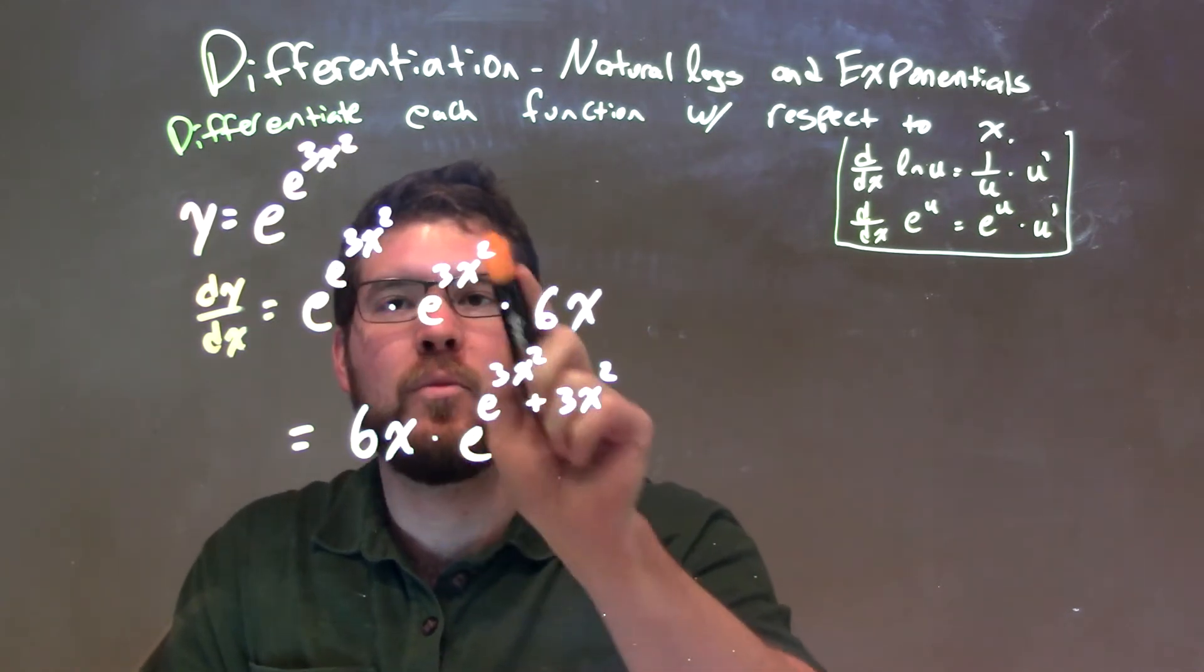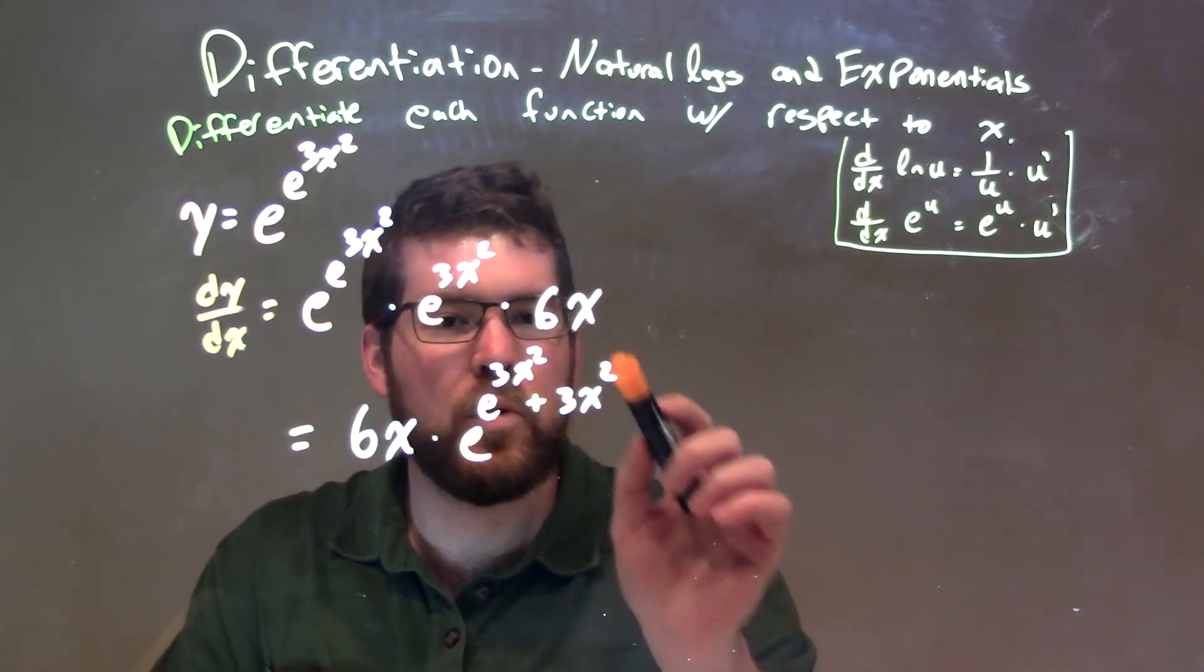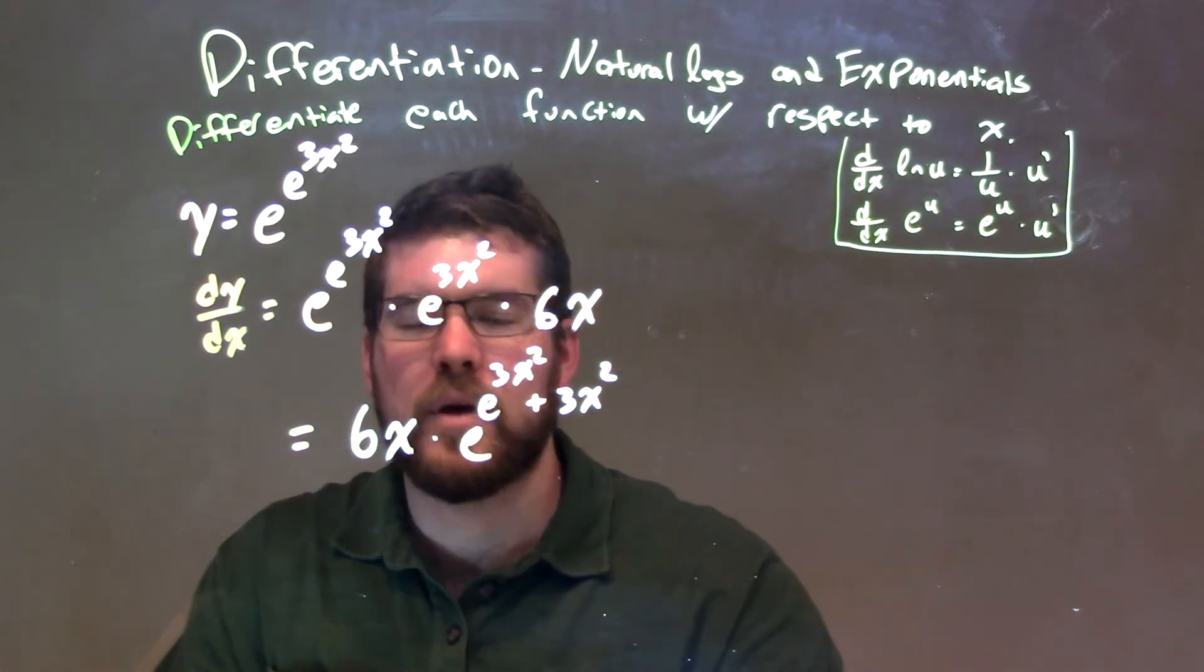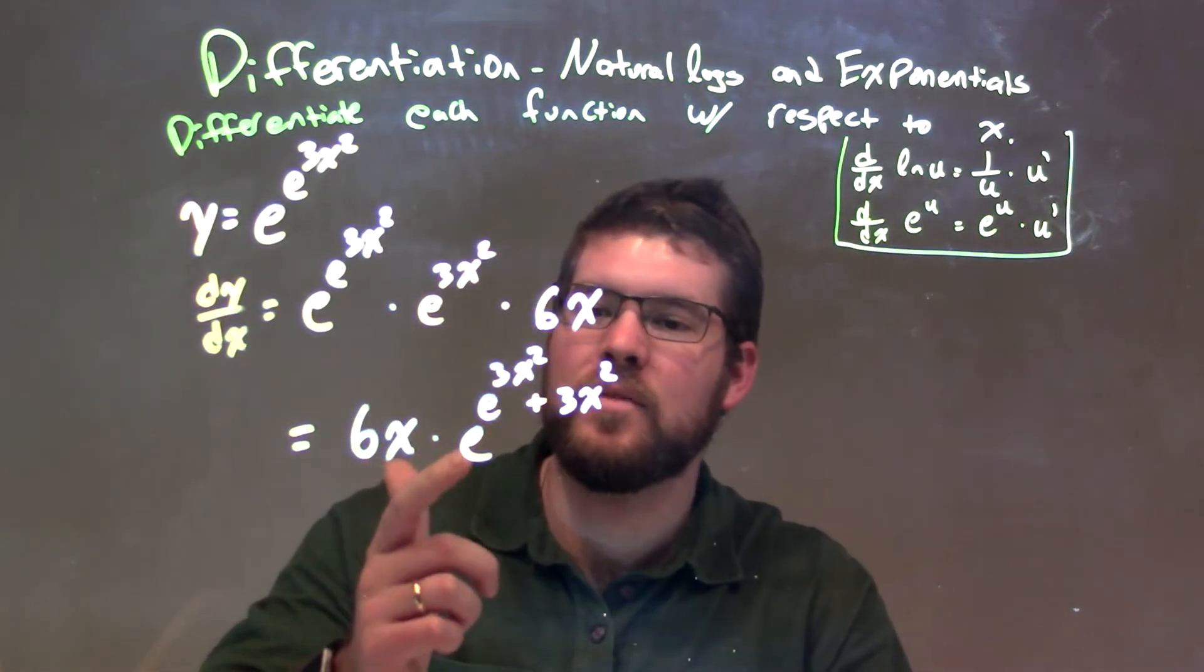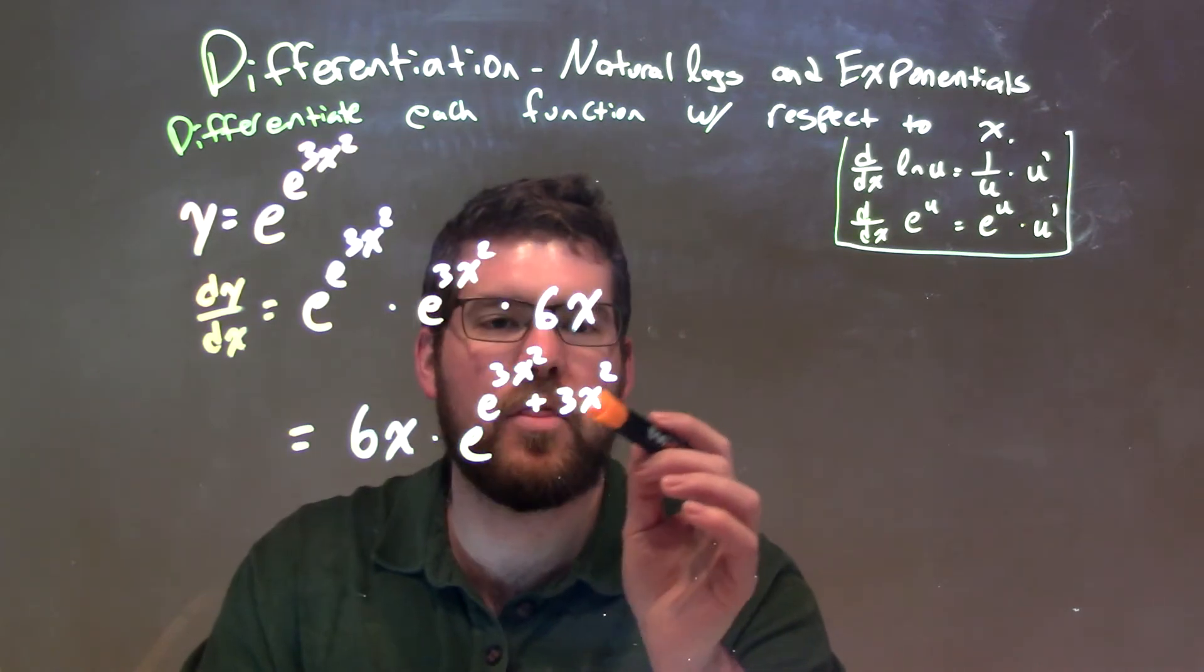So we can rewrite this as e to the, now this whole thing is the exponent, e to the 3x squared plus 3x squared. So again, our final answer is 6x times e to the, all exponent now, of e to the 3x squared plus 3x squared.